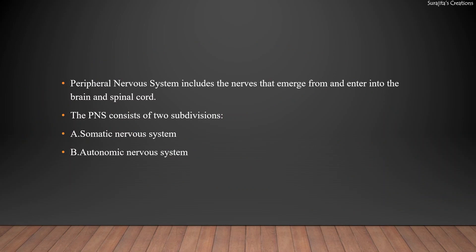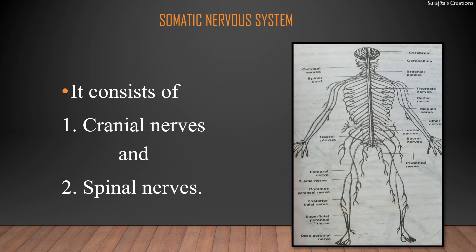The peripheral nervous system includes the nerves that emerge from and enter into the brain and spinal cord. It consists of two subdivisions: somatic nervous system and autonomic nervous system. The somatic nervous system consists of cranial nerves and spinal nerves. Cranial nerves arise mainly from the brain stem, whereas spinal nerves arise from the spinal cord.